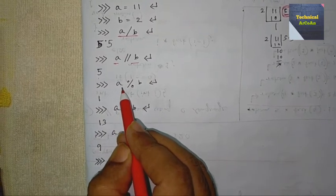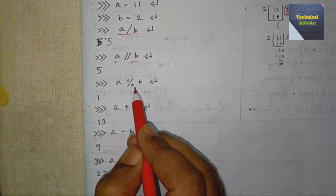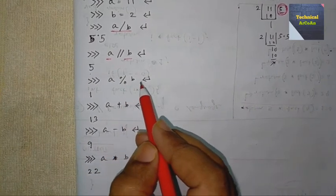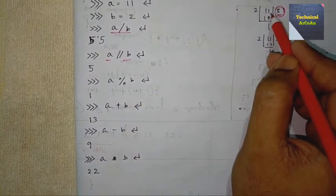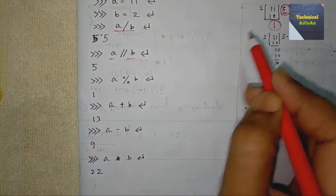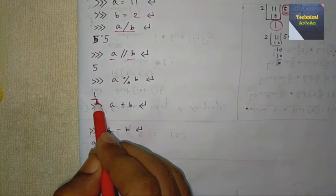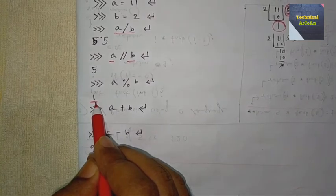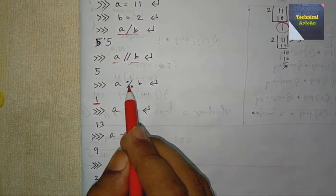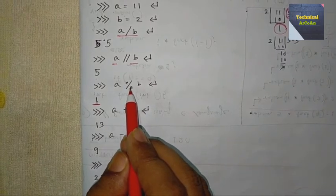Next we use the modulo operator. What does it do? It finds the remainder. When we divide 11 by 2, the remainder is 1, so we get 1 as the result. Again, when using the modulo operator in Python, both variables should be integers.